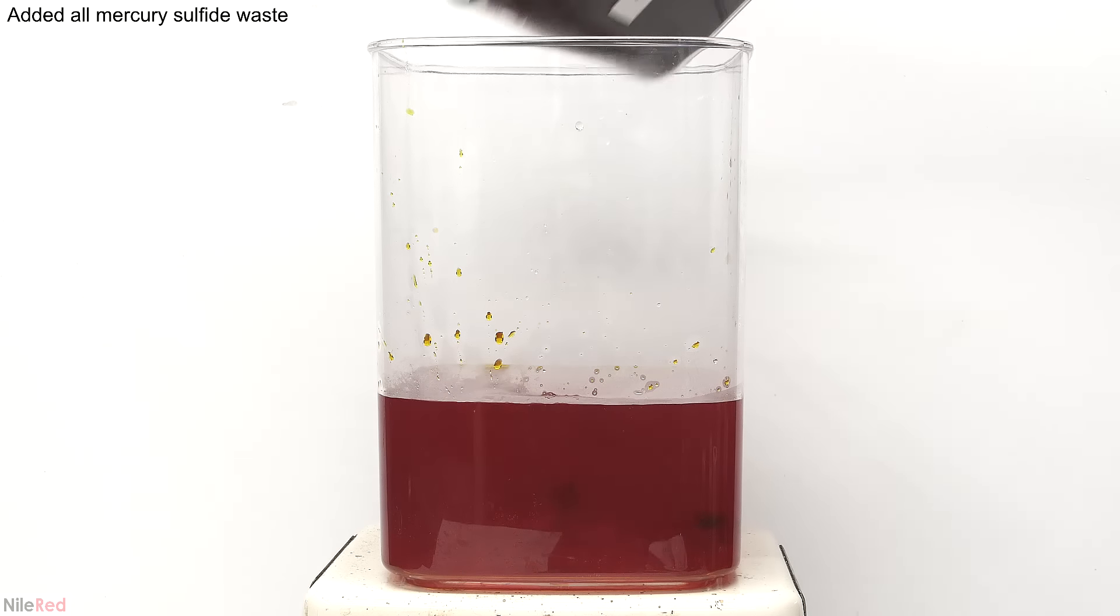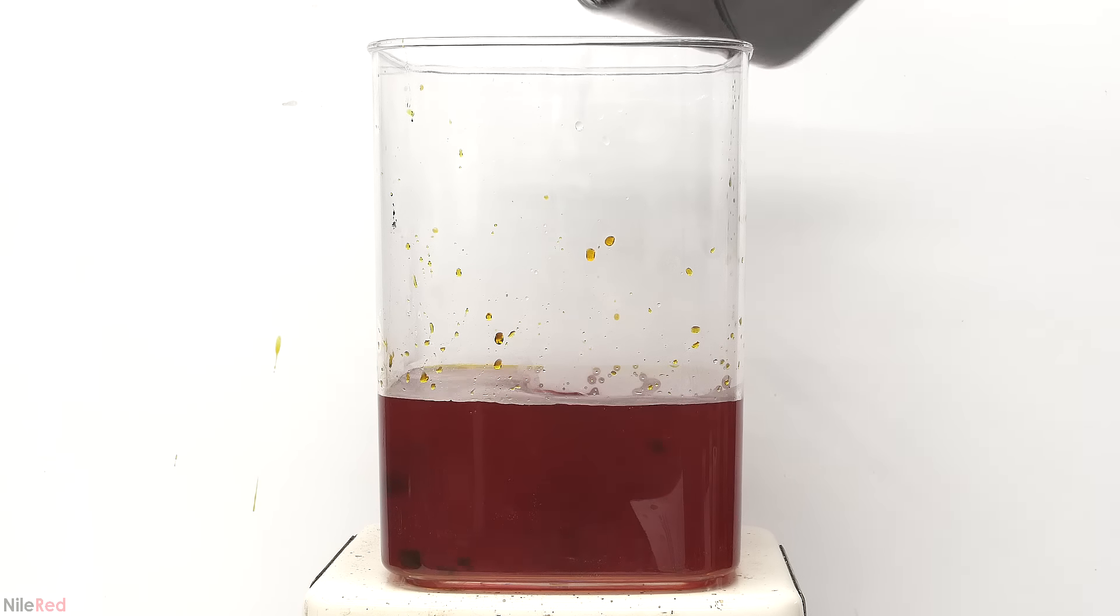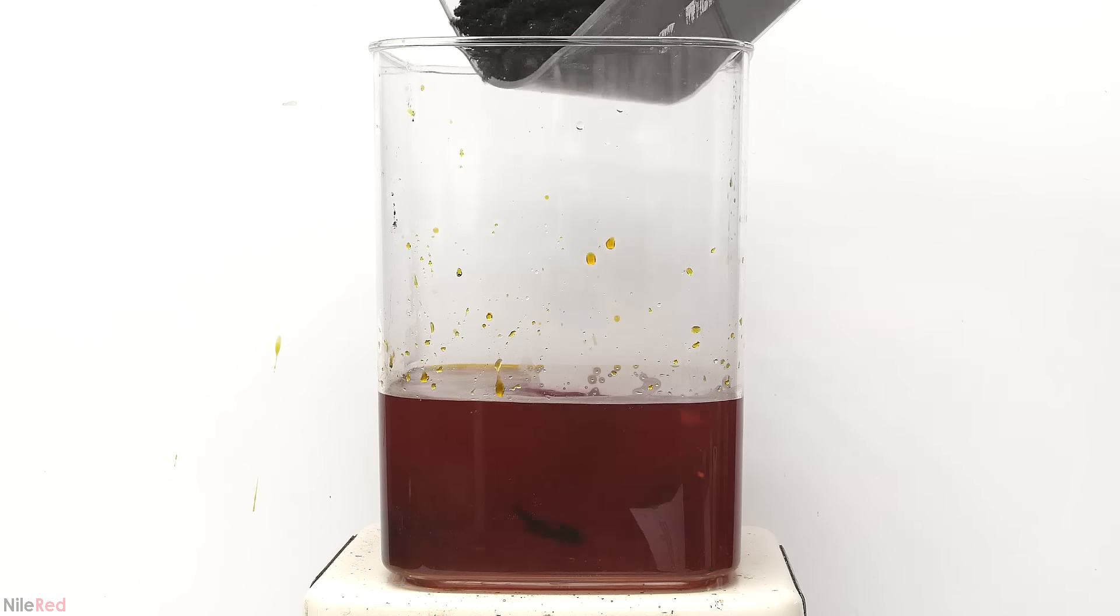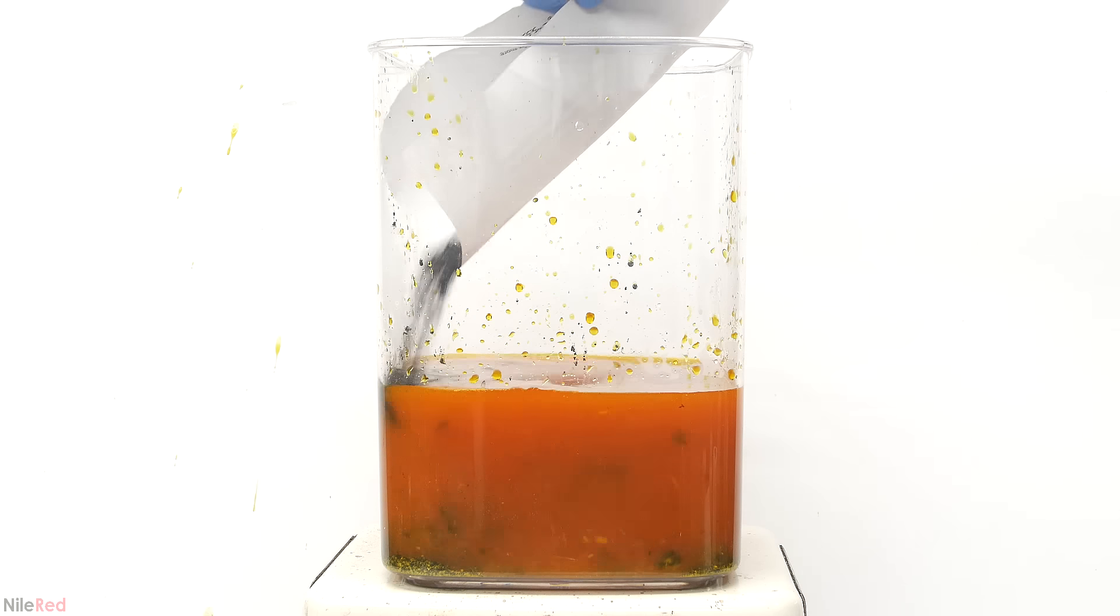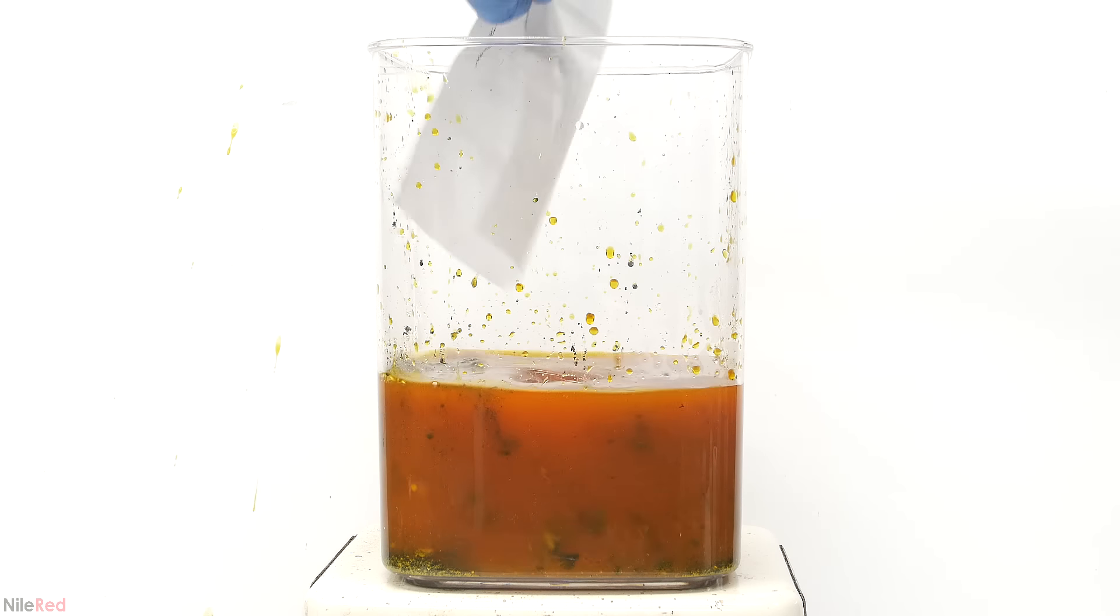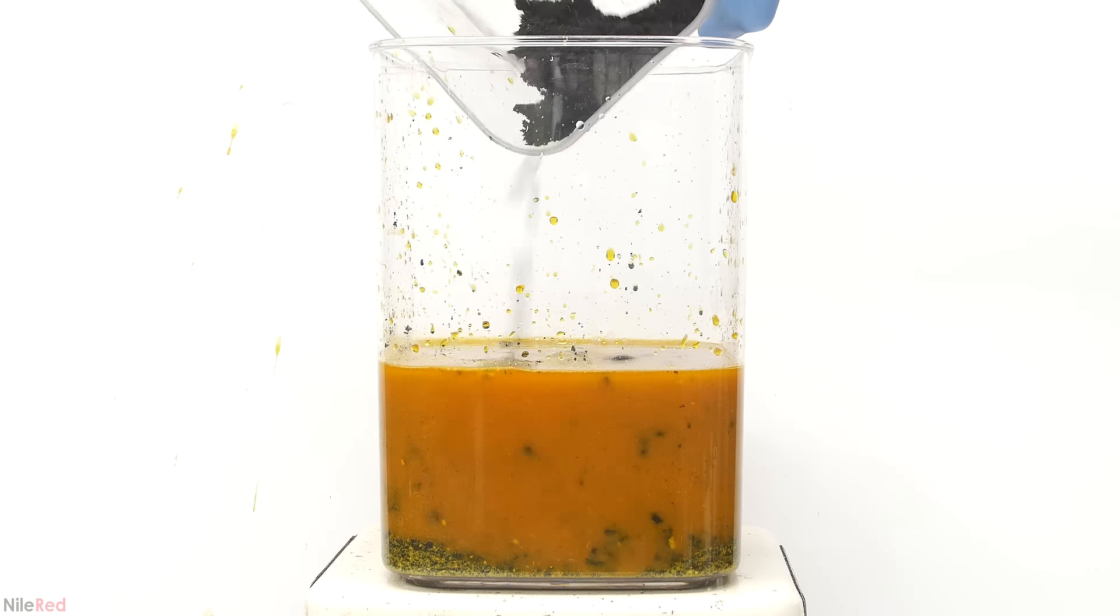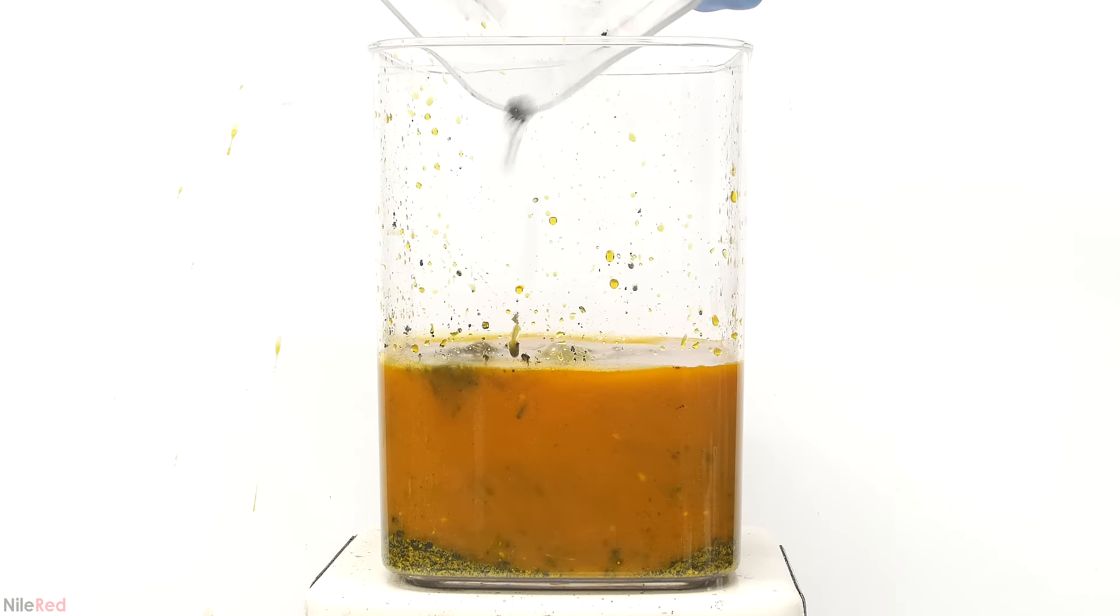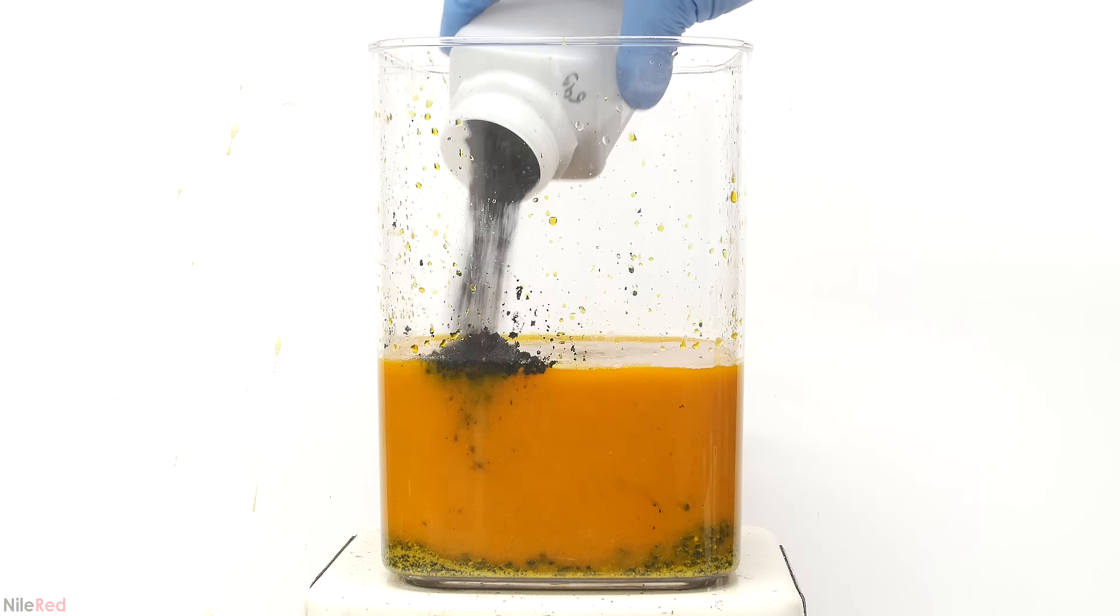The stirring is turned on again, and then I start to dump in the mercury sulfide. At first I tried to just dump it in directly, but it led to a lot of splashing. So instead, I had to transfer it in small portions to a piece of paper and then dump it in gently. As more is added, the solution slowly loses its red color and becomes more orange, and we also see some sulfur precipitating out.